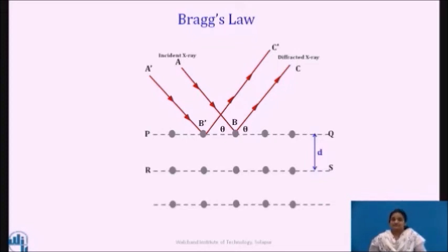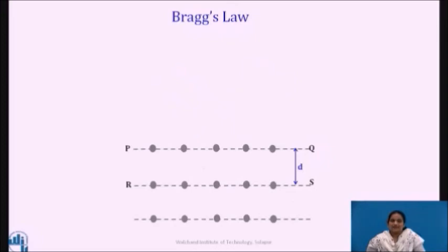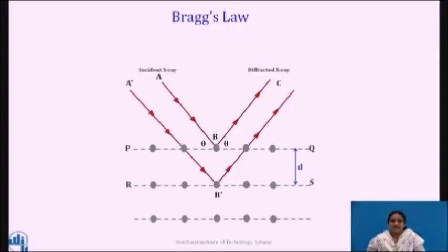Now, next we will consider the contribution of two adjacent atoms from successive planes. Let a set of parallel beam of monochromatic x-rays AB and AB dash of wavelength lambda be incident on the plane PQ at a glancing angle theta. The incident x-rays will be reflected in all directions by the atoms. The scattered beam emerges along BC and B dash C dash. The rays BC and B dash C dash are coherent and reinforce each other if they are in phase. So again it requires the path travelled by these two rays is equal. If we observe this diagram, it is clear that path travelled by the beam scattered from the adjacent plane is more than the scattered from the top plane.